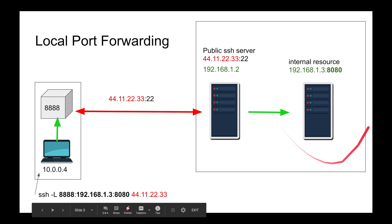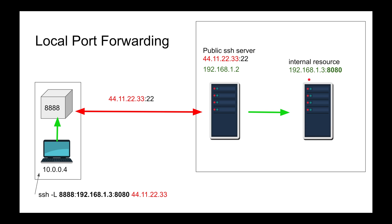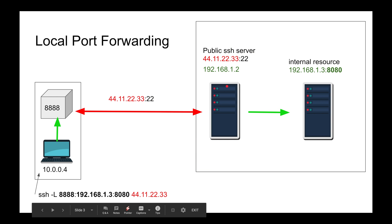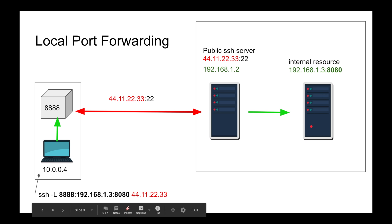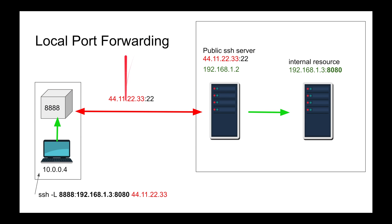This is also useful for hiding your identity — it's very similar to a VPN, where the public SSH server acts as your VPN server. If your ISP is blocking access to a certain domain, you can tunnel through the secure SSH connection and have the server make that request on your behalf. Your ISP will only see that you're connecting to that SSH server, so it acts very similarly to a VPN.